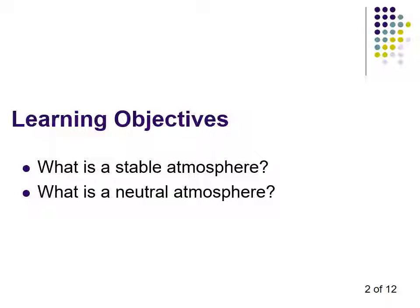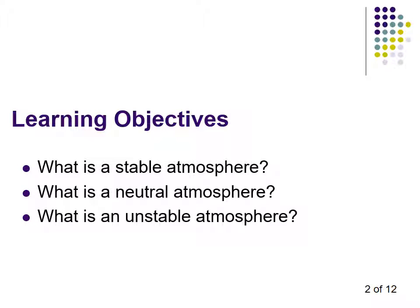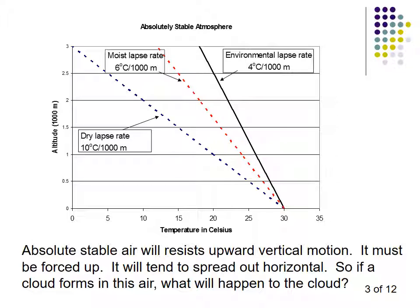Here we have three lines. The blue line is the dry adiabatic lapse rate — for every thousand meters you go up, temperature decreases 10 degrees. The red line is the moist adiabatic lapse rate — for every thousand meters you go up, temperature decreases 6 degrees. Then we have the environmental lapse rate — in this case, for every thousand meters you go up, temperature decreases only 4 degrees.